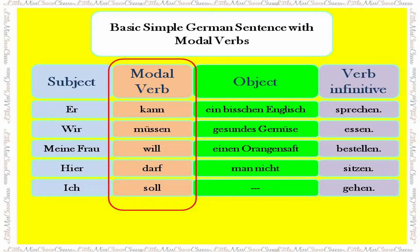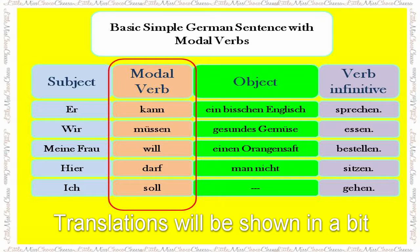Now we will use the modal verb in a basic German sentence. 'Er kann ein bisschen Englisch sprechen.' 'Wir müssen gesundes Gemüse essen.' 'Meine Frau will einen Orangensaft bestellen.' 'Hier darf man nicht sitzen.' 'Ich soll gehen.'